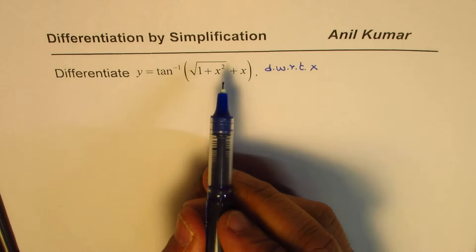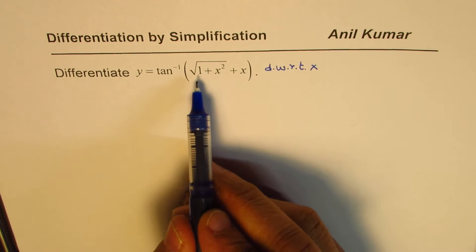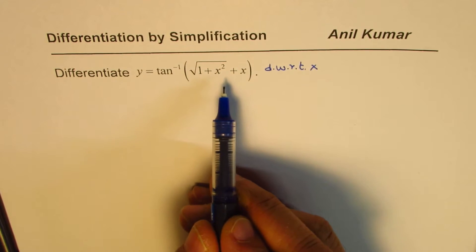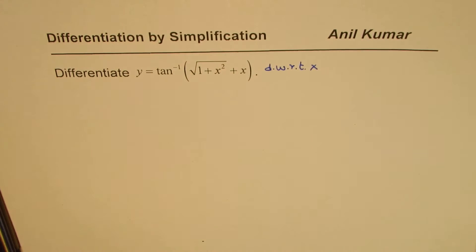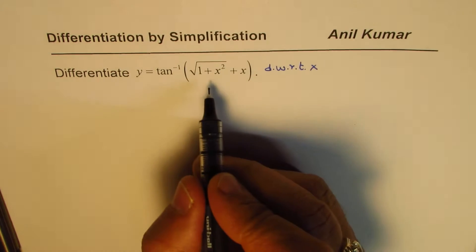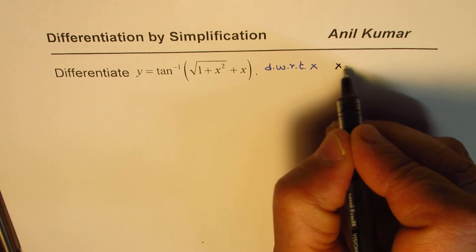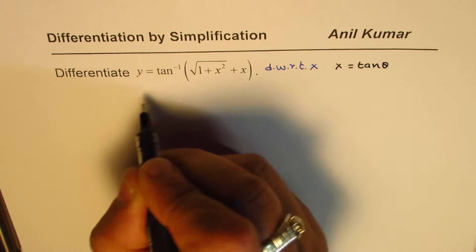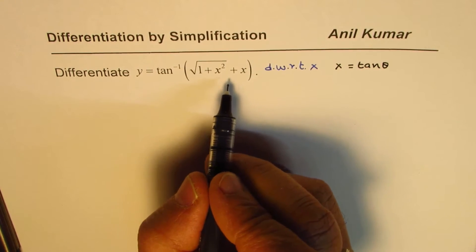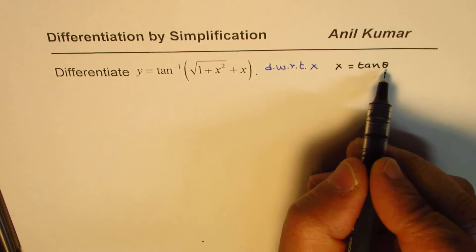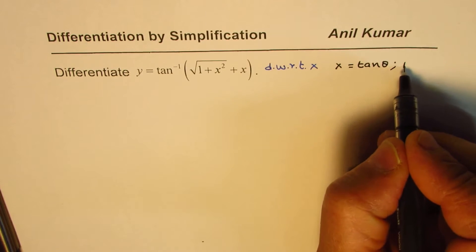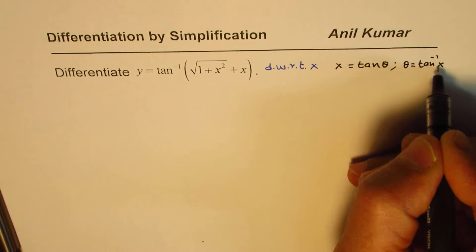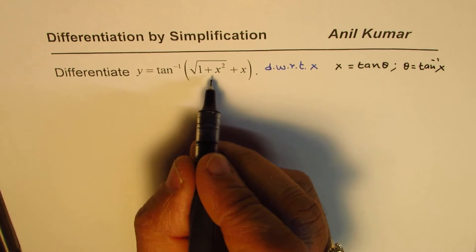Now, in such questions, the idea is to simplify so that we get a tan term within this, which we can do with a simple substitution. If we substitute x with tan theta and then solve, we can actually simplify this. So if x equals to tan theta, then theta equals to tan inverse x. That's the substitution we are going to make.